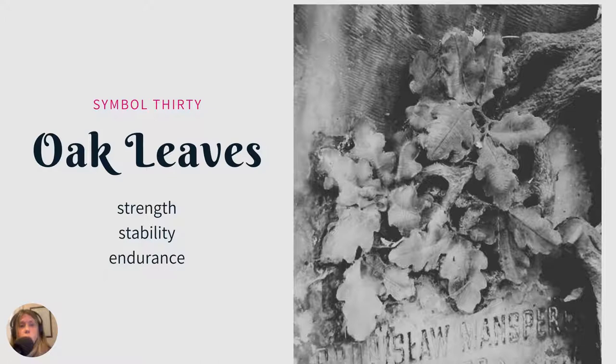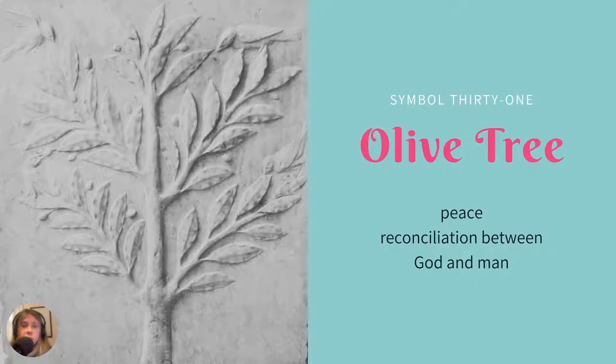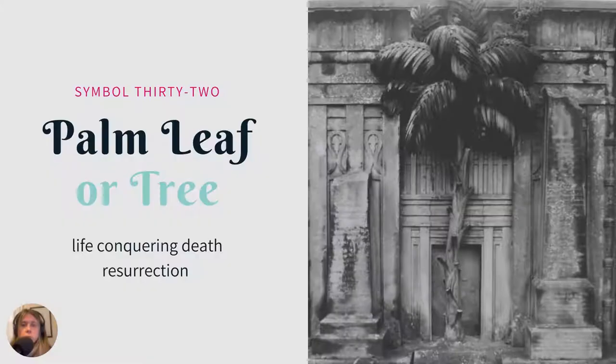Oak leaves — like the acorns, here we have the oak and oak leaves. Oaks mean strength, stability, and endurance. Again, just telling you something about that person or what the family thought about them. An olive tree represents peace and reconciliation — reconciliation between God and man. The idea of flora representing personality traits feels very Victorian, though olive trees of course go back much further.